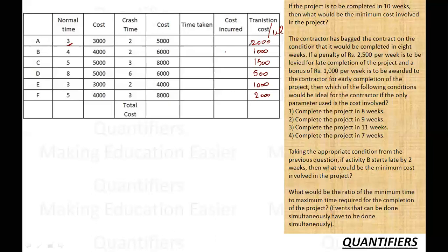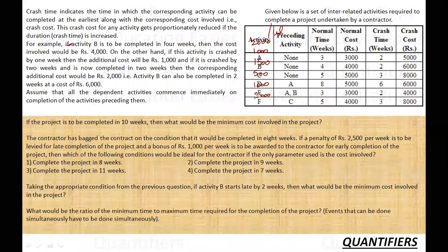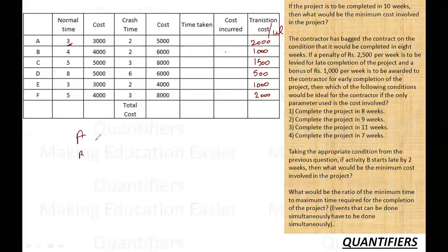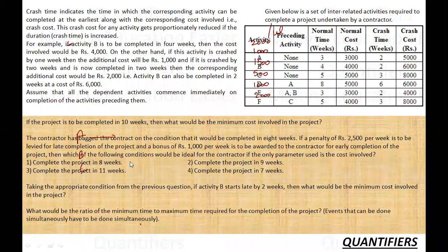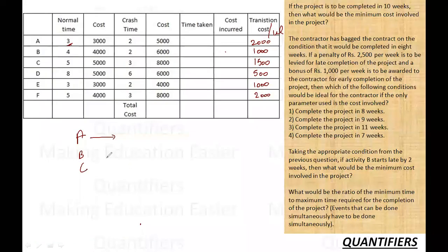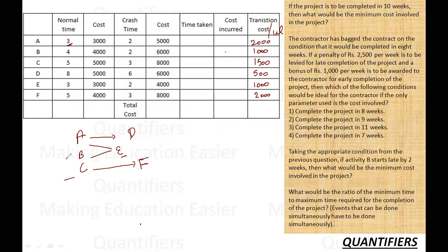Now, the activity dependencies: A, B, and C are independent. D must be preceded by A. E requires both A and B. F requires C. So F cannot start until C is done, D cannot start until A is done, and E cannot start until both A and B are done. Question 1: The project has to be completed in 10 weeks — what is the minimum cost involved?